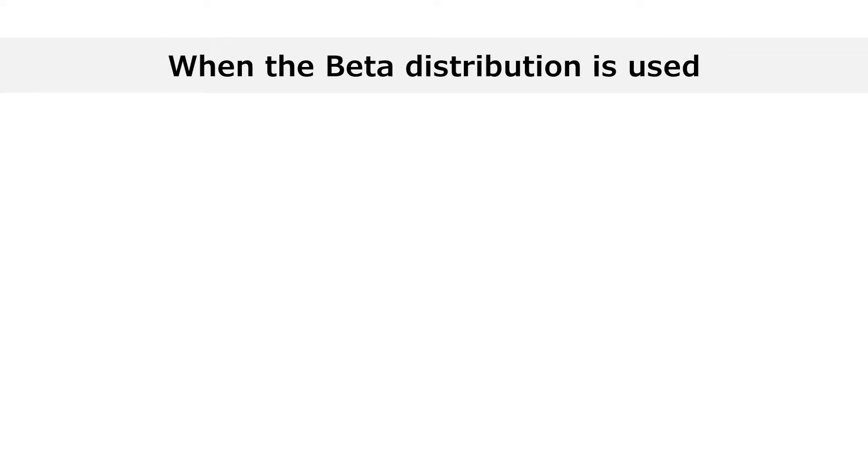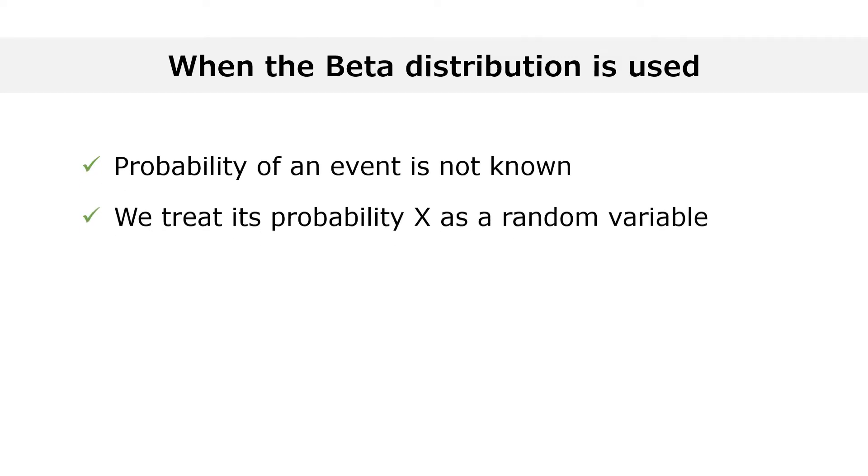We use the beta distribution when we don't know precisely the probability of a certain event. We treat the unknown probability as a random variable and assign a beta distribution to it.